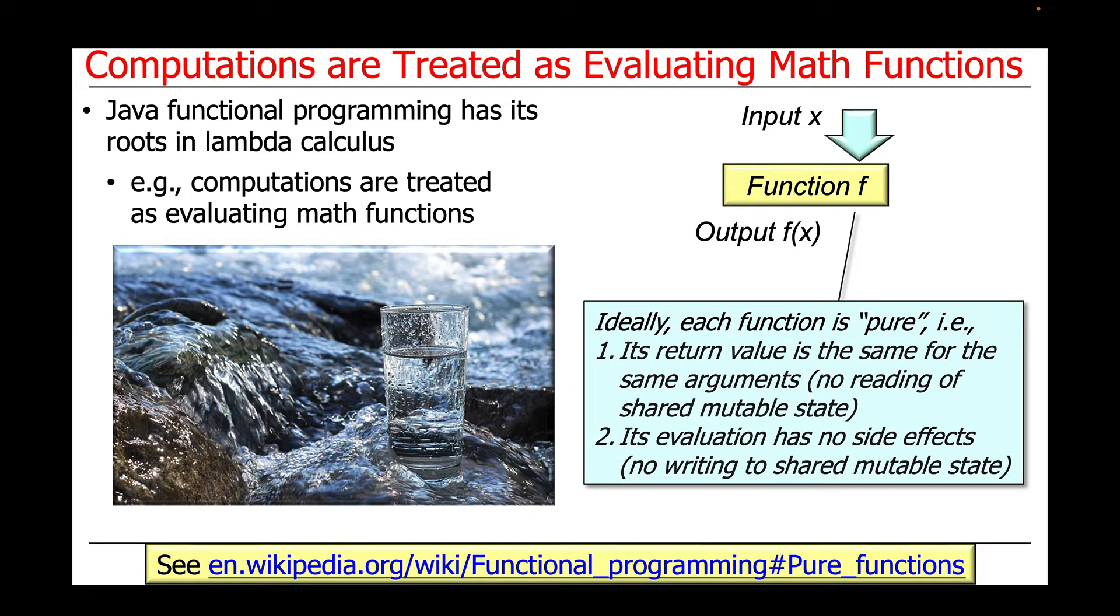Ideally, each function in a functional programming model is pure. And what that means is its return value is the same for the same arguments. In other words, there's no reading of a shared mutable state. And its evaluation has no side effects, meaning that there's no writing to shared mutable state.